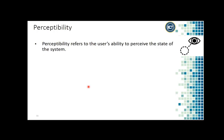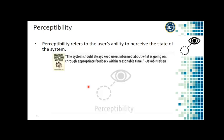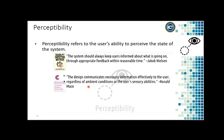Perceptibility is another design heuristic that refers to the user's ability to perceive the state of the system. Nielsen says the system should always keep users informed about what is going on through appropriate feedback within a reasonable time. Ronald Mace says the design communicates necessary information effectively to the user regardless of ambient conditions or the user's sensory abilities.